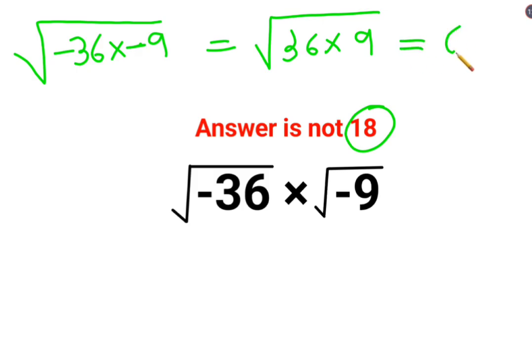And when you take them out of the root we have 6 multiplied by 3, and that is how you should get the answer as 18. Now this is where things go wrong because this is not correct.